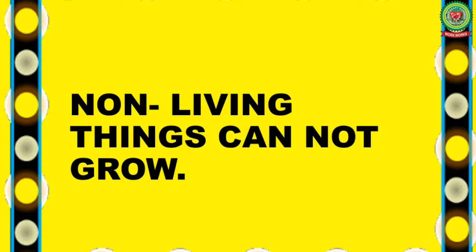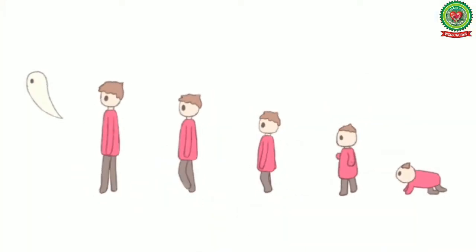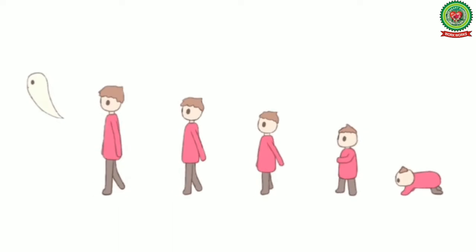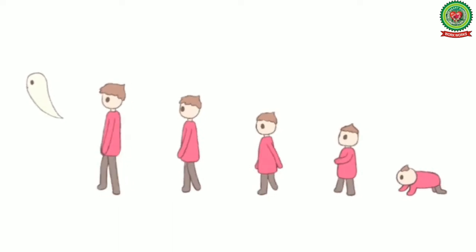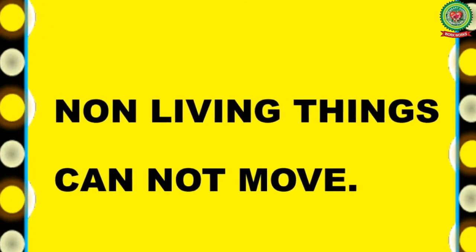The second feature is non-living things cannot grow. Living things can grow, but non-living things cannot. In the first picture you can see the stages of human growth — a child growing into an adult. In the second picture you can see clothes and shoes, which are non-living things. They cannot grow on their own; according to our growth we have to purchase new ones.